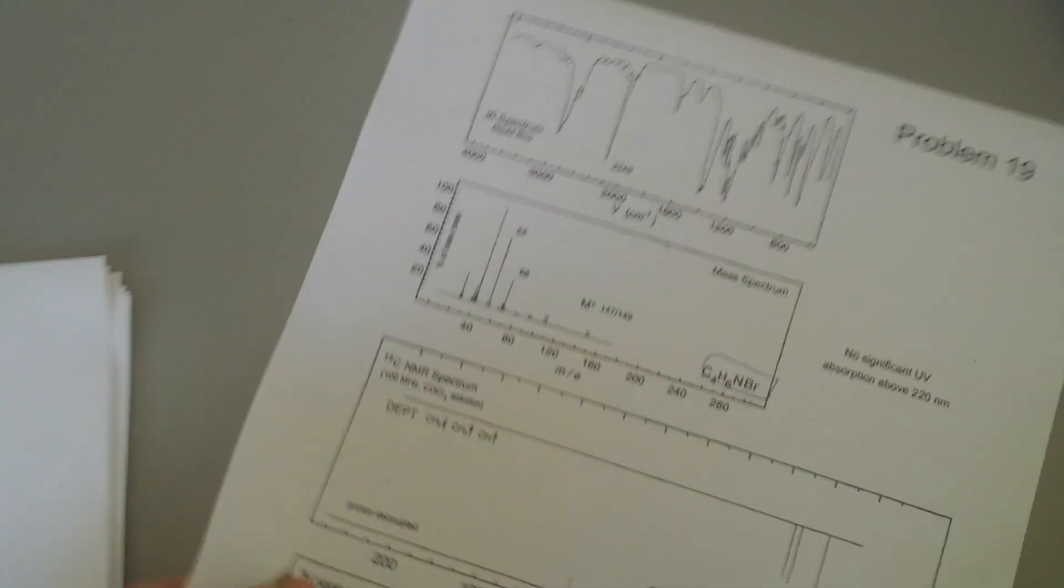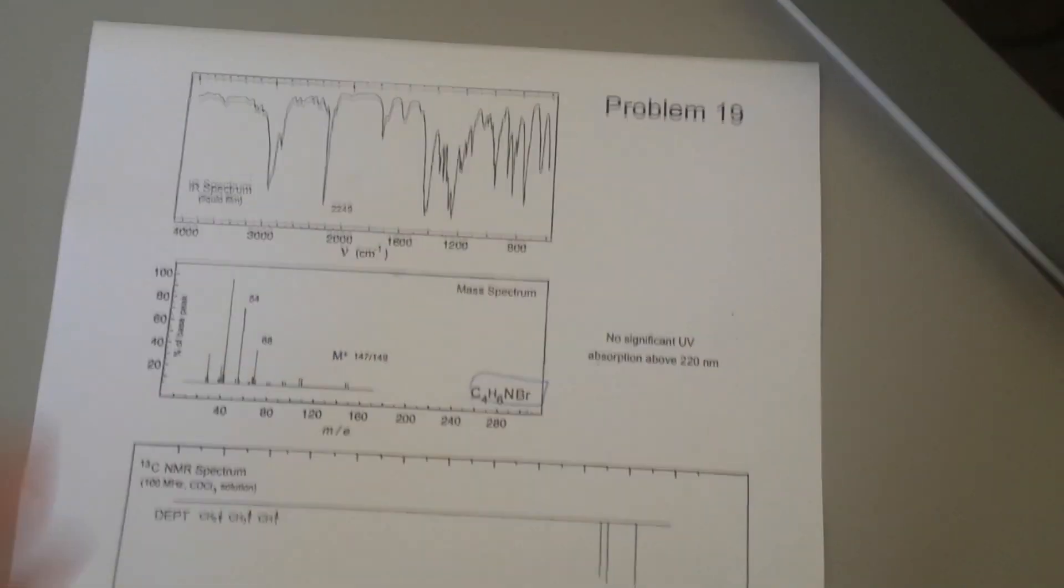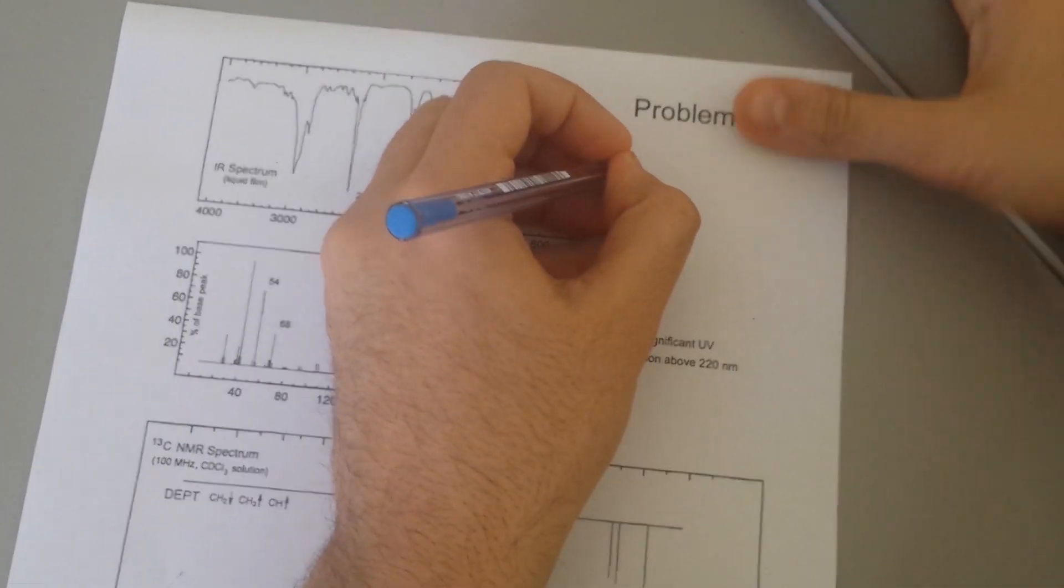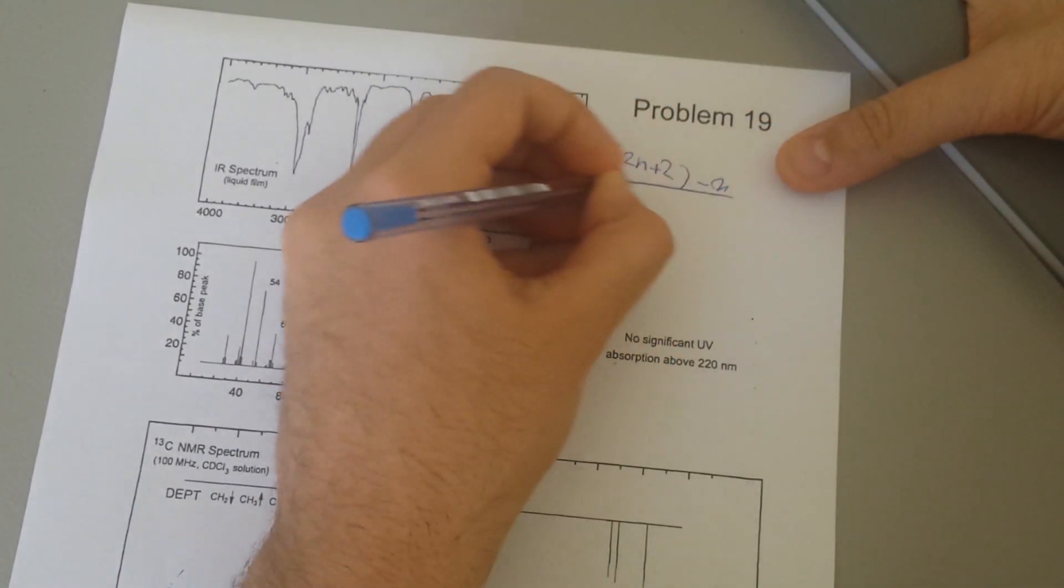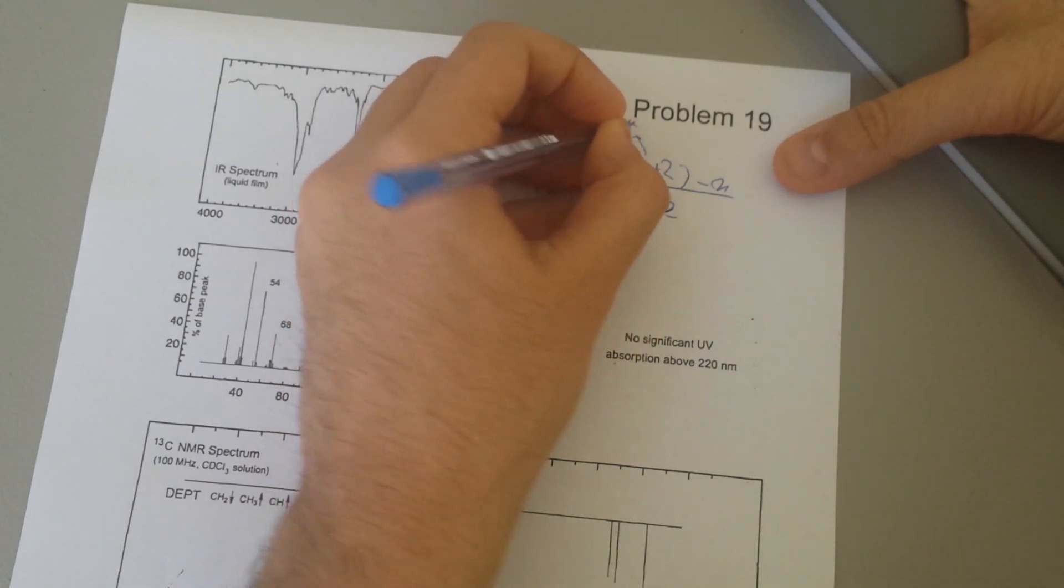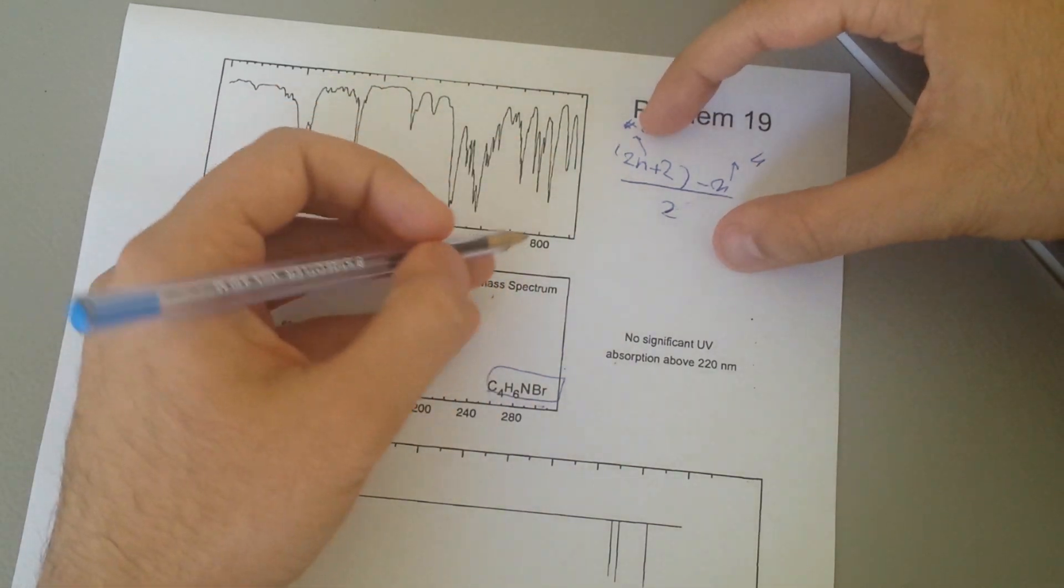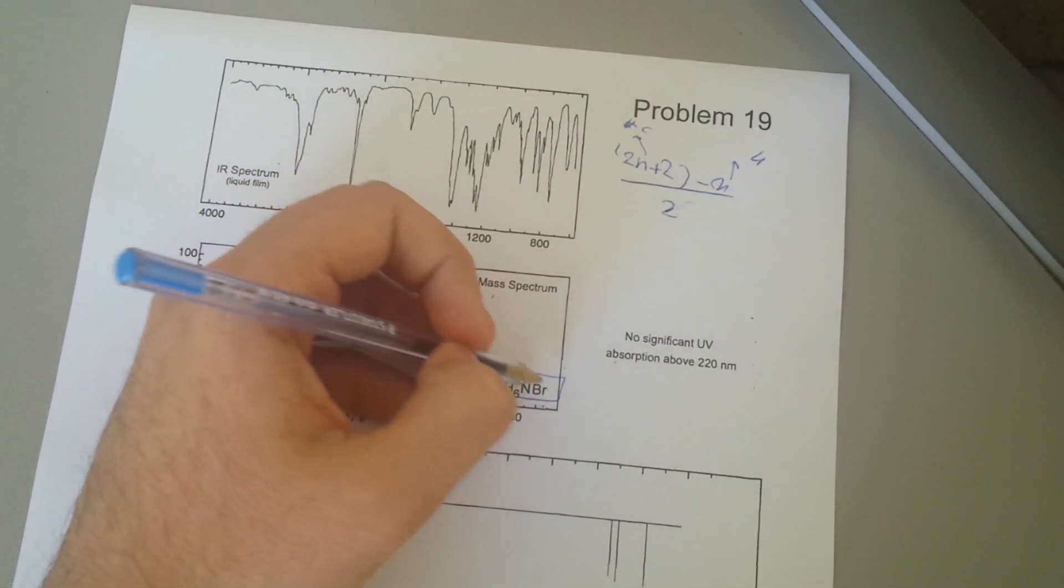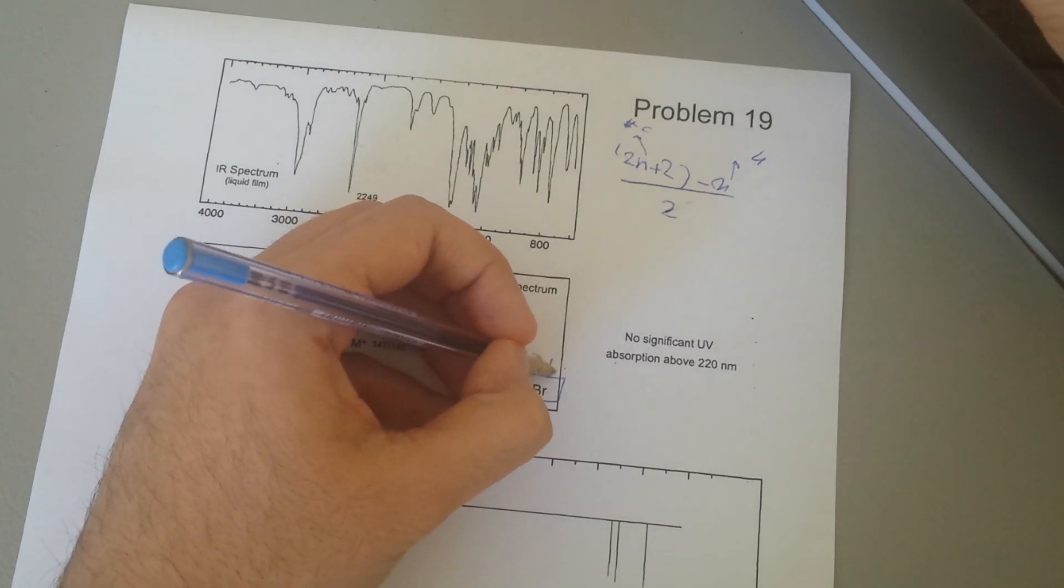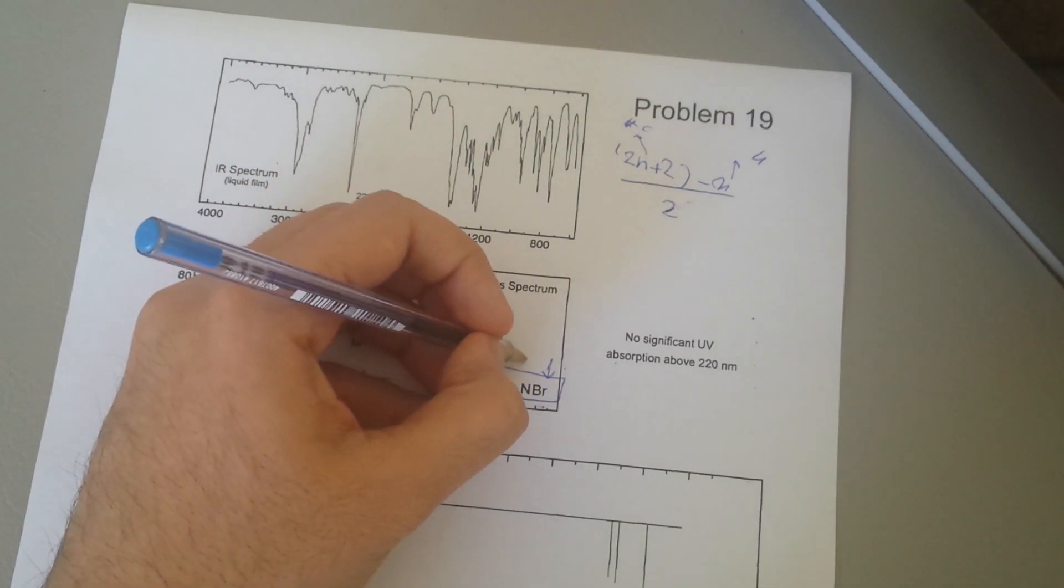So for that to be the case, there will be 2n plus 2 minus x over 2, where n is the number of carbons, x is the number of hydrogens. Now using this rule, if you're going to replace one hydrogen with one halogen, which is in this case bromine, and we're going to remove one hydrogen with one nitrogen.